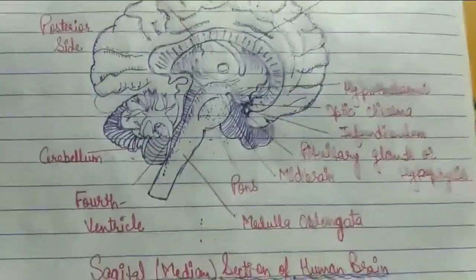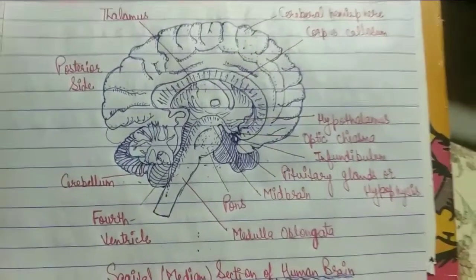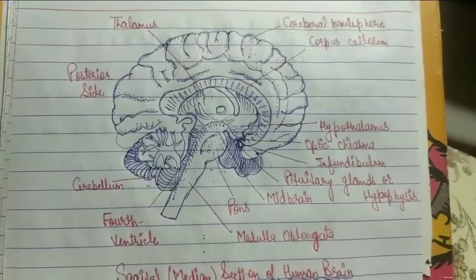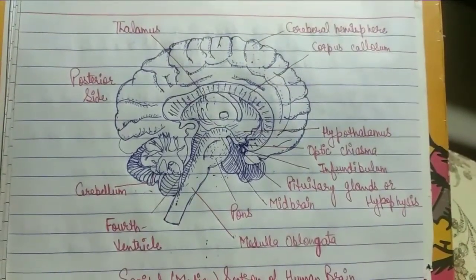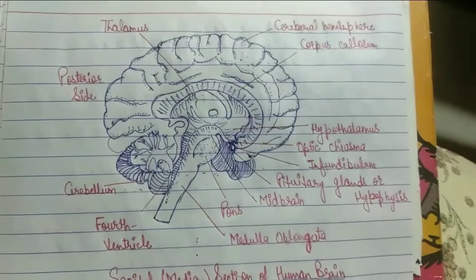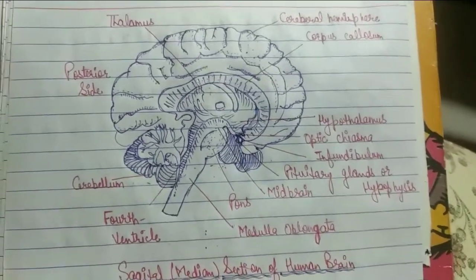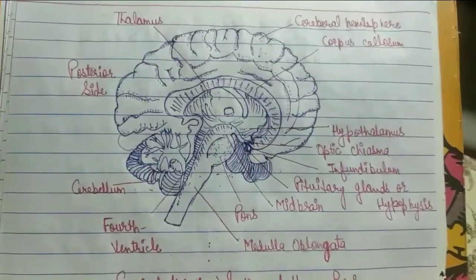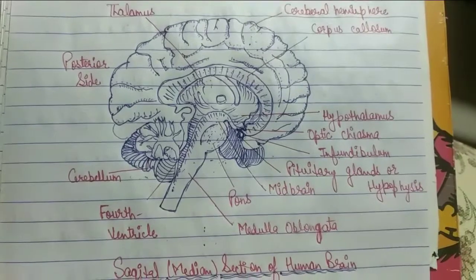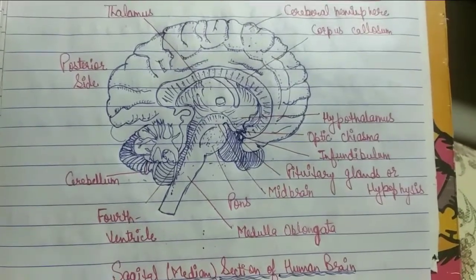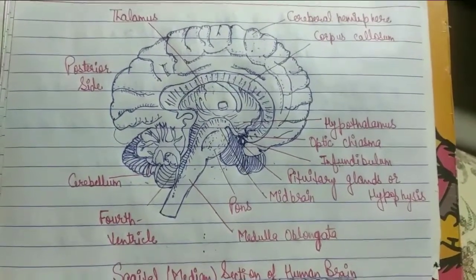So this is the brain diagram, which is a median section of the human brain showing its different parts. This completes your 7th chapter, which is Control and Coordination.